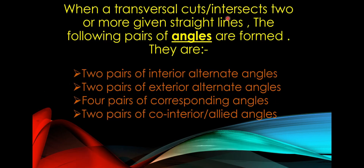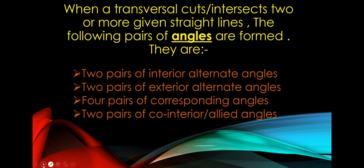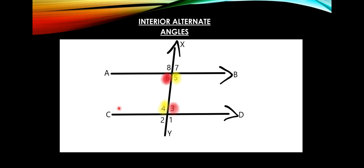When a transversal cuts or intersects two or more straight lines, the following pairs of angles are formed: two pairs of interior alternate angles, two pairs of exterior alternate angles, four pairs of corresponding angles, and two pairs of co-interior or allied angles. Let us see them one by one.